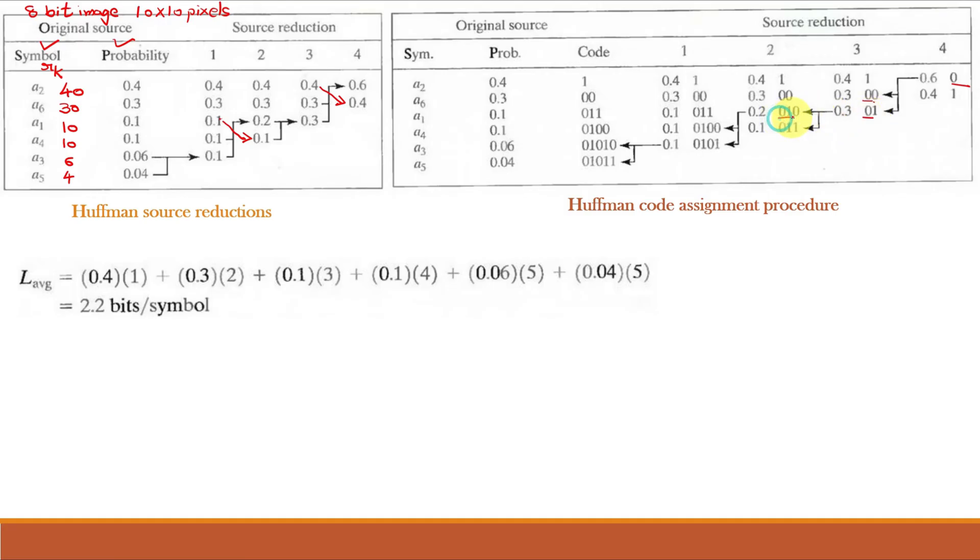For this 0.3 the value is 0,1. So, we will write 0,1 and 0,1. And we will append 0 and 1. Similarly, this 0.2 came from this 0.1 and 0.1. So, it is 0,1,0. So, we will write here 0,1,0, 010 and we will add 0 and 1. And similarly, this 0.1 came from these two values. So, value is 0,1,0,1. So, we will write 0,1,0,1 as it is 0,1,0,1 and we will add 0 and 1. Now, we got the codes for 0.06 which is 0,1,0,1,0 and 0.04 which is 0,1,0,1,1. So, these two values are obtained.